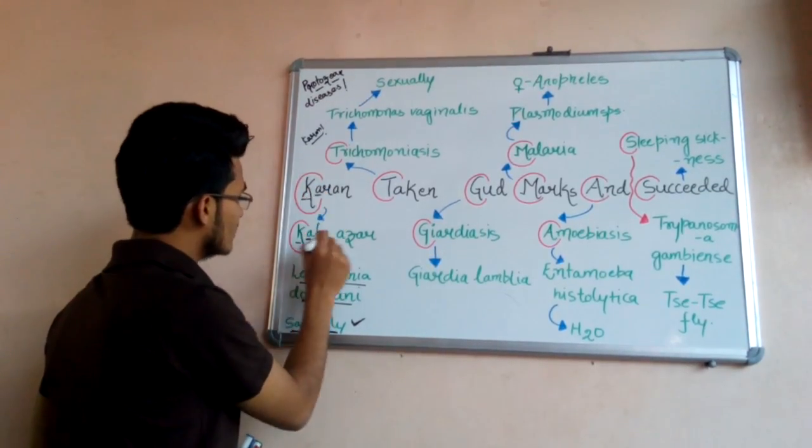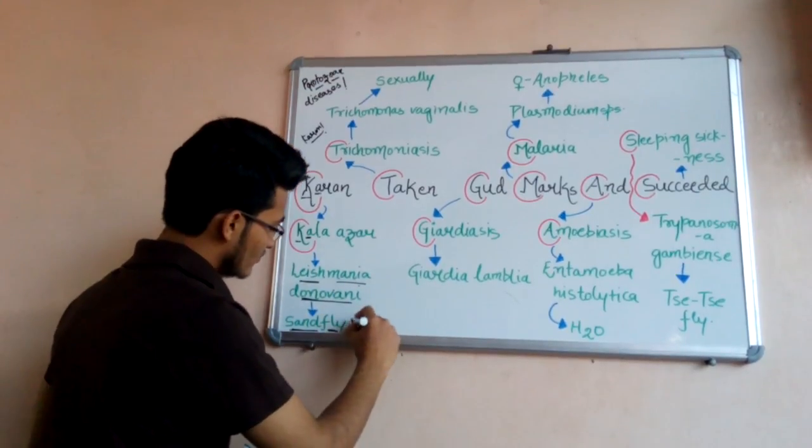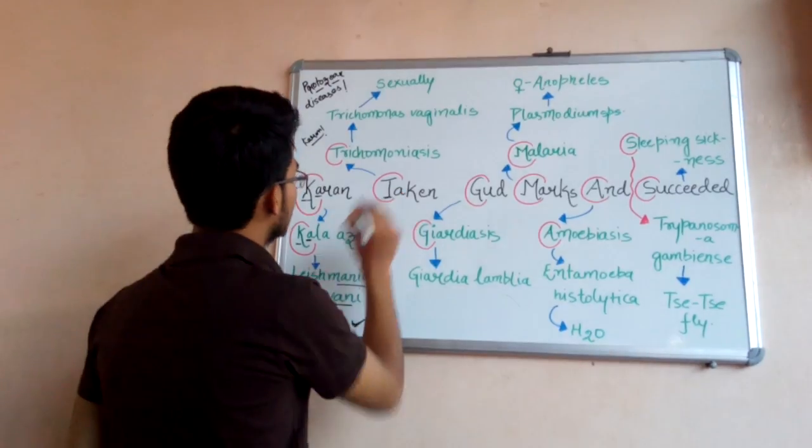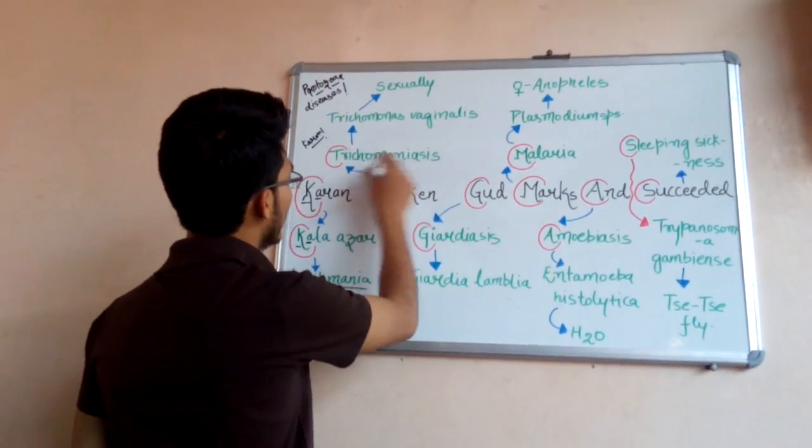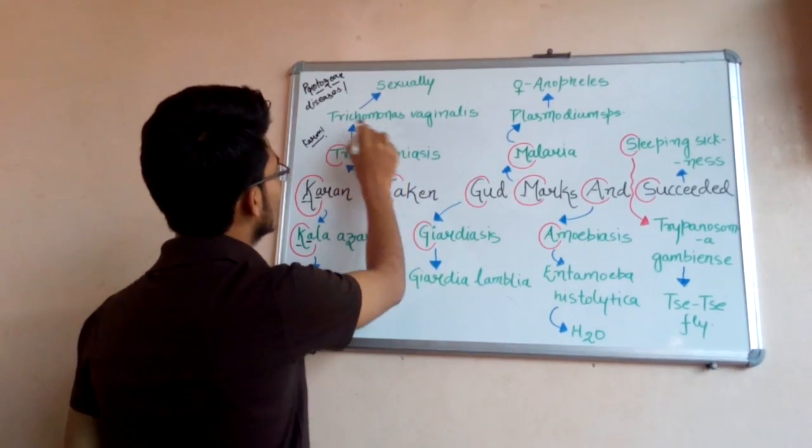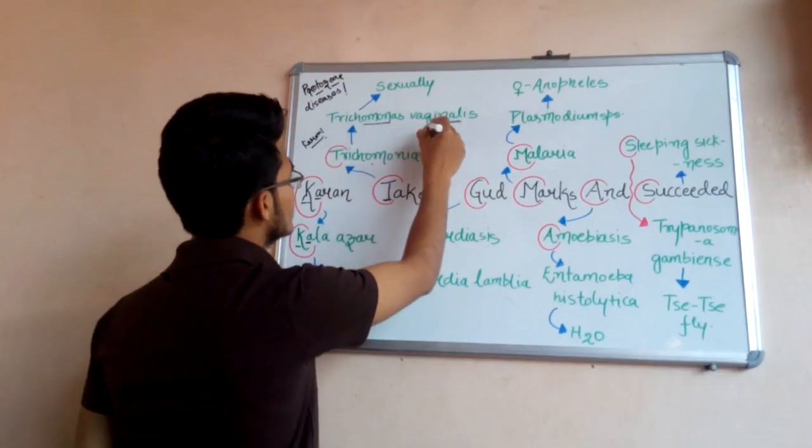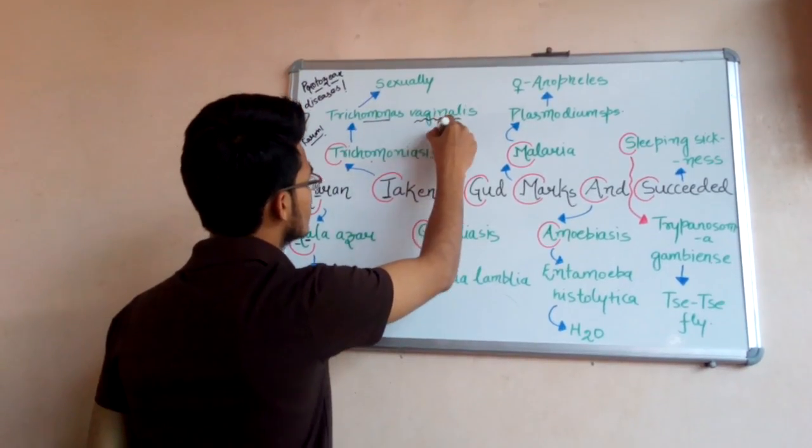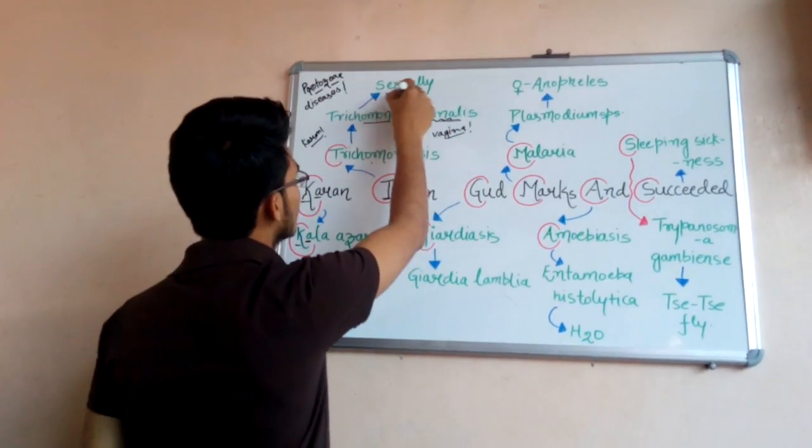Taken - T means Trichomoniasis. As the name indicates, it is caused by Trichomonas vaginalis. Vaginalis simply means related to vagina, the sexual part in female, so it will be transmitted sexually.